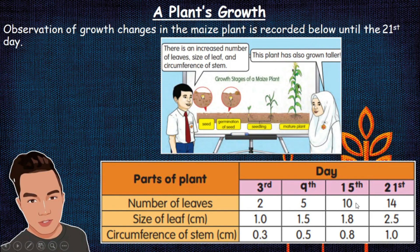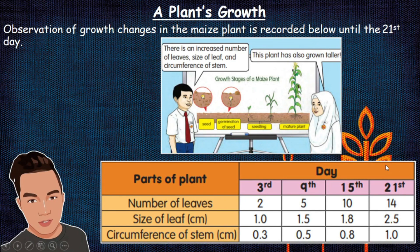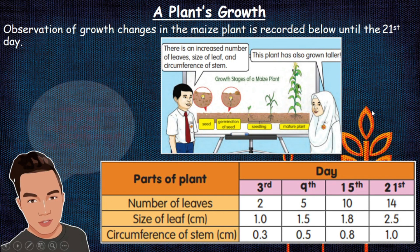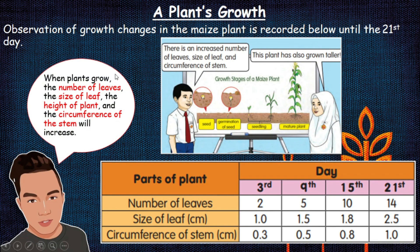On day 15 the number of leaves again increases from 5 to 10 leaves. The size of the leaves also gets bigger, from 1.5 centimeters increasing to 1.8 centimeters, and the circumference of the stem increases from 0.5 to 0.8 centimeters. Finally on day 21, the number of leaves increases to 14 leaves, the size of the leaves increases to 2.5 centimeters, and the circumference of the stem increases from 0.8 to 1.1 centimeters.